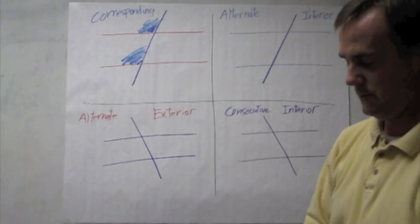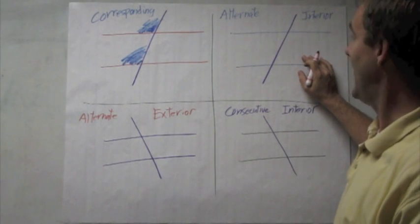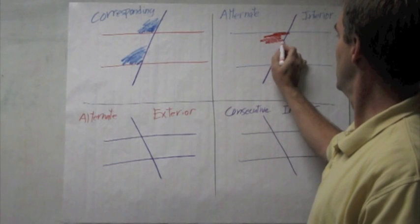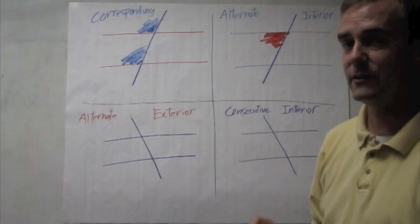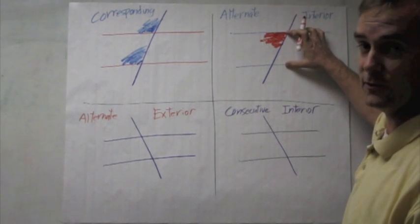Alternate interior. Well, it's interior to the two lines, and it's on alternate sides of the transversal. So, if I started with this one. The alternate interior angle is on the alternate side, interior to the two blue lines.